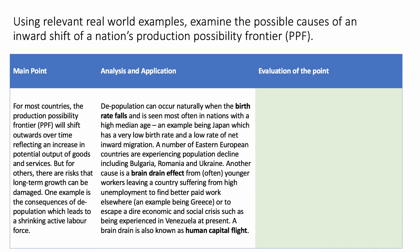Depopulation and negative population growth can occur naturally when there's a big fall in the birth rate, and it's seen most often in countries with a high median age. A very good example at the moment is Japan, which has both a very low birth rate and a low rate of net inward migration. Quite a few Eastern European countries, including some inside the European Union, are seeing their population shrink. Good examples to quote in an essay would be Bulgaria, Romania — both inside the EU — and Ukraine, which is outside the EU.